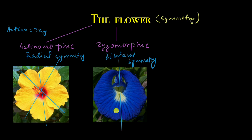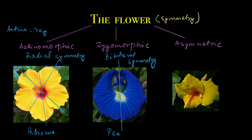An example of bilateral symmetry flowers would be flowers belonging to the family of peas, and for radial symmetry, hibiscus is a good example. Now there are some flowers which are asymmetric — you can't think of any possible plane for this flower which will divide it into two equal halves. The flower shown here is called canna. This is only one way in which the flower can be classified.